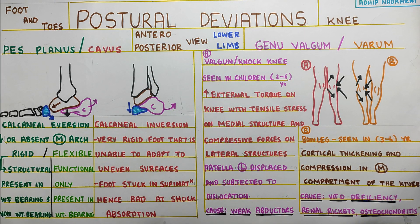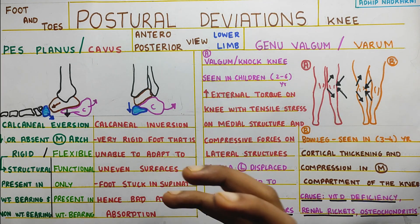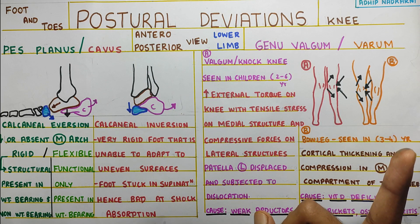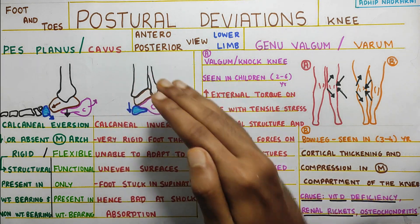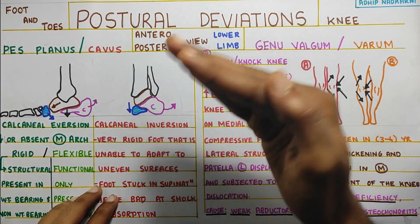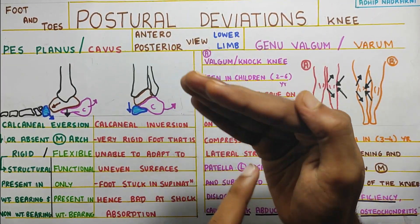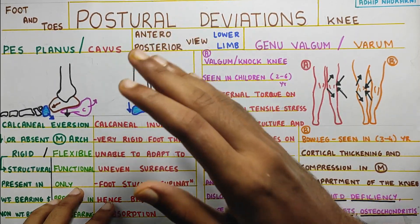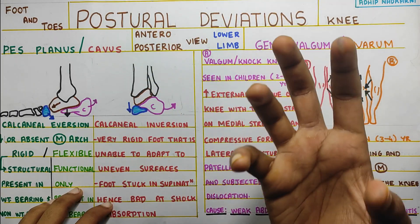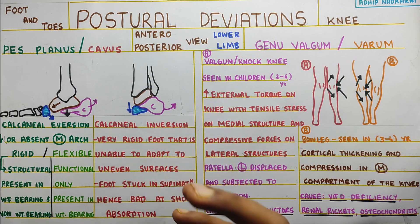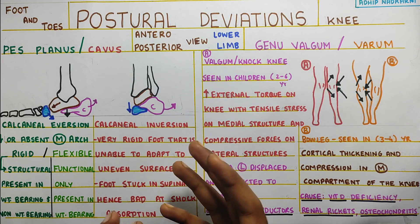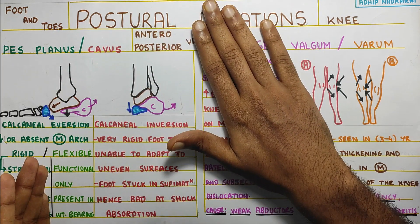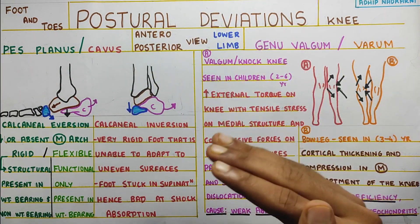Supination and pronation are complex terms, so you need to be clear with ankle biomechanics — I'll link that video. Once your foot is stuck in supination, it is very rigid and cannot absorb forces. Whereas flat foot is too flail and also won't have proper force absorption. The best balance needs to be present at the ankle. That's why these are called postural deviations — either pes planus (flat foot) or pes cavus (high arch foot).